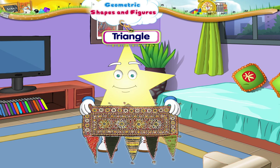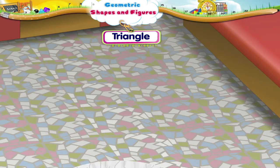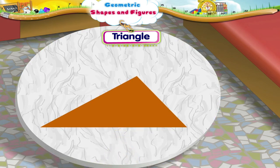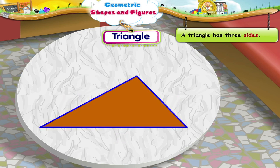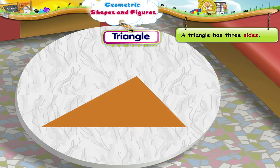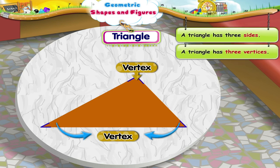Triangle! Hello, Starry! You seem to be doing something interesting. Oh! You are making a turret for your house. Good! Starry, do you see any geometric shapes in this turret? Yes! These are triangles. Let us learn more about triangles. A triangle has one, two, three sides. The three sides could be big or small. The triangle has three corners. Each is called a vertex. So, the triangle has three vertices.